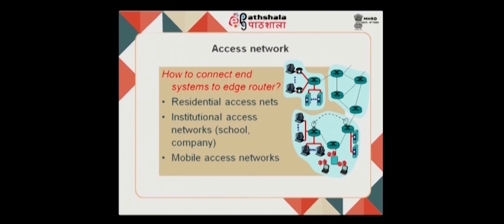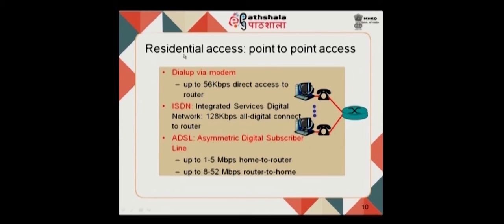Access networks connect end systems to the edge router. For residential access, one option is point-to-point dial-up via modem, where your machine connects through a telephone line to a router. This provides access of about 56 kilobits per second — quite slow by today's standards, though the option is still available.